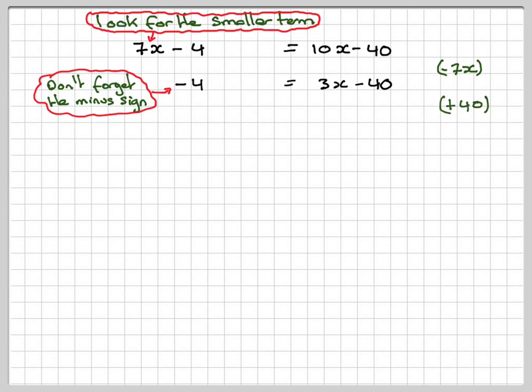Now add 40 to both sides. -4 plus 40 gives 36, and this side is 3x. Now divide by 3, and we get x equals 12.